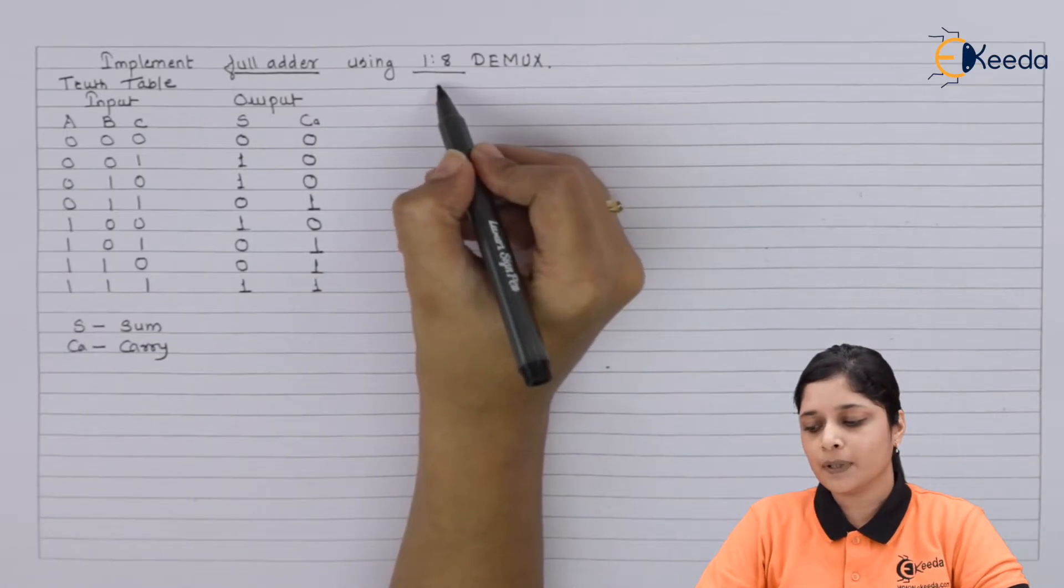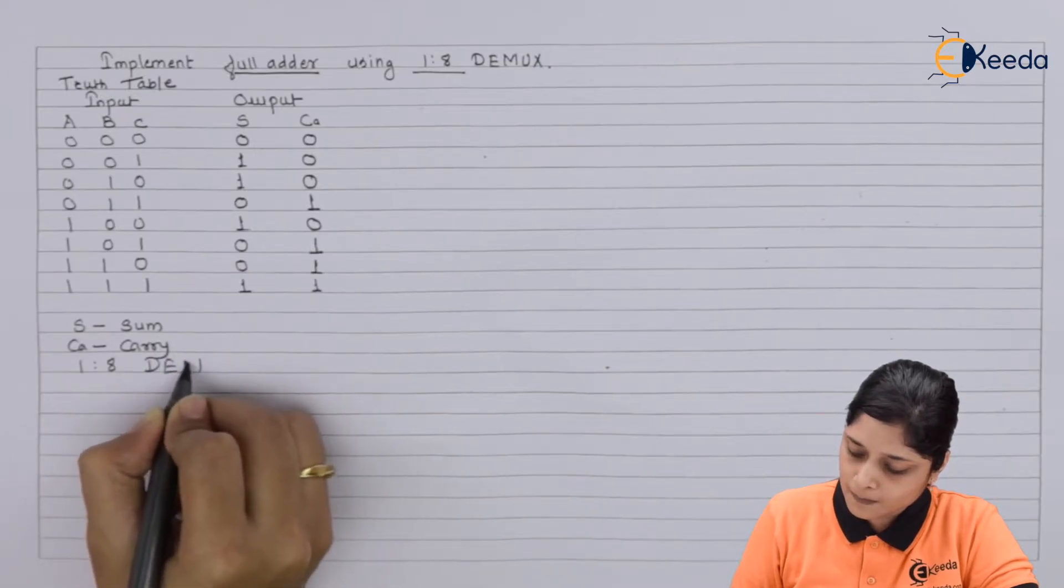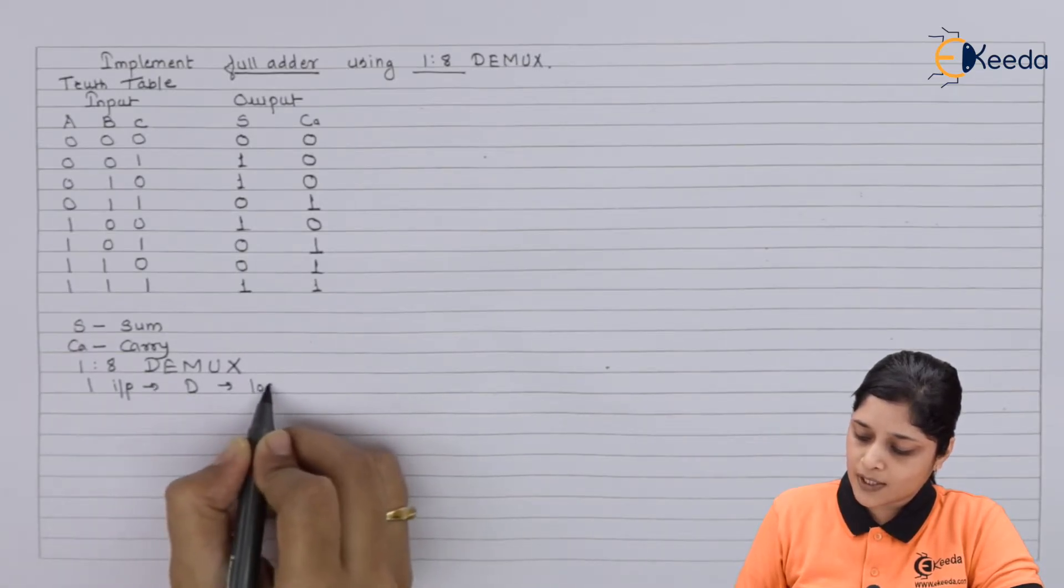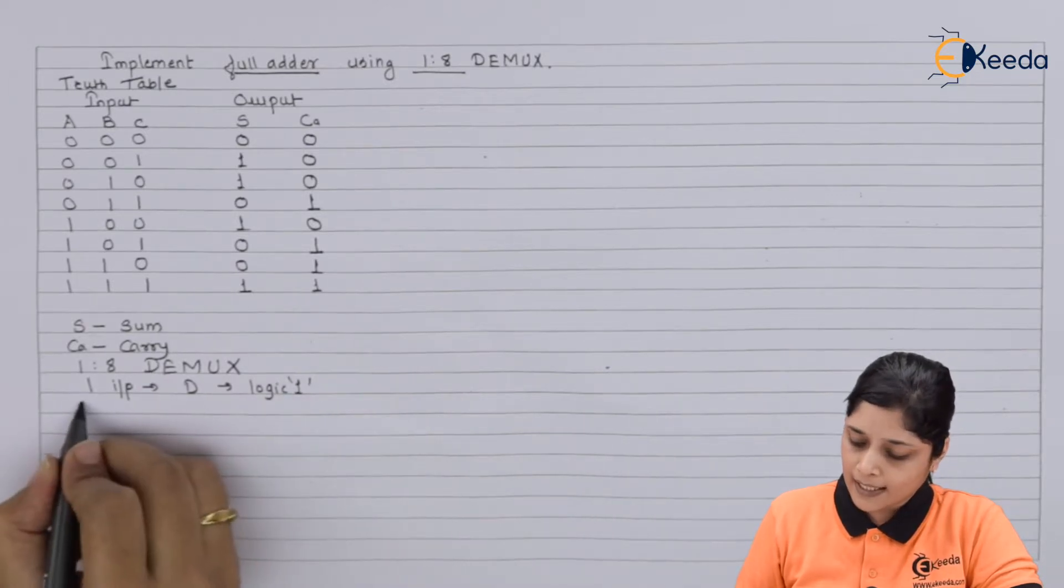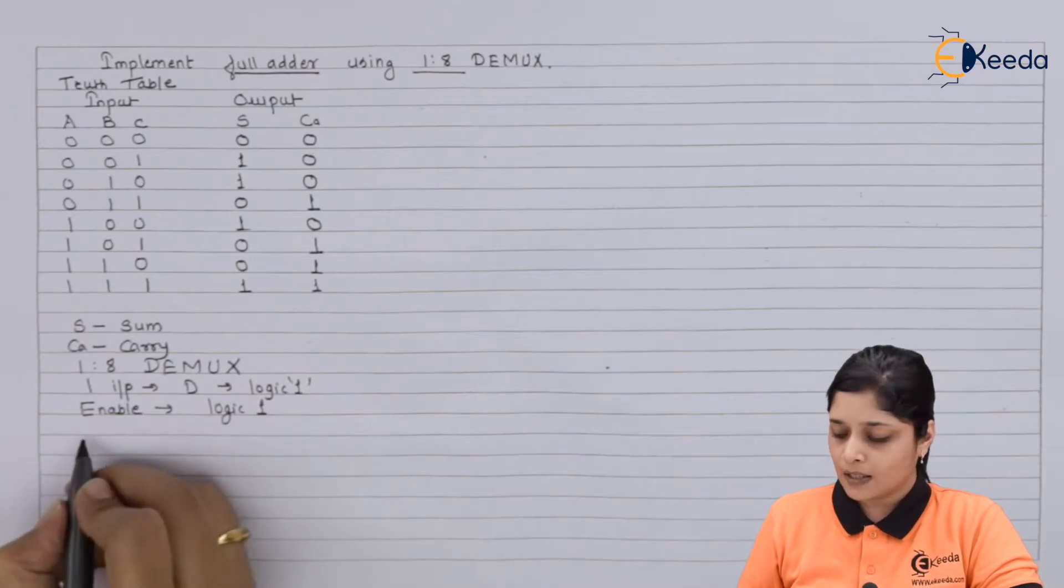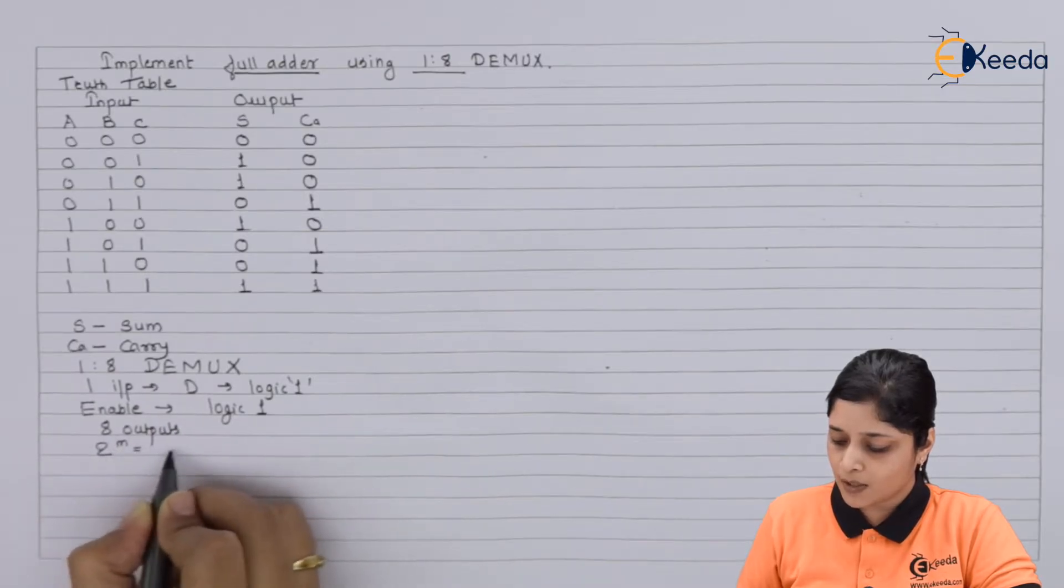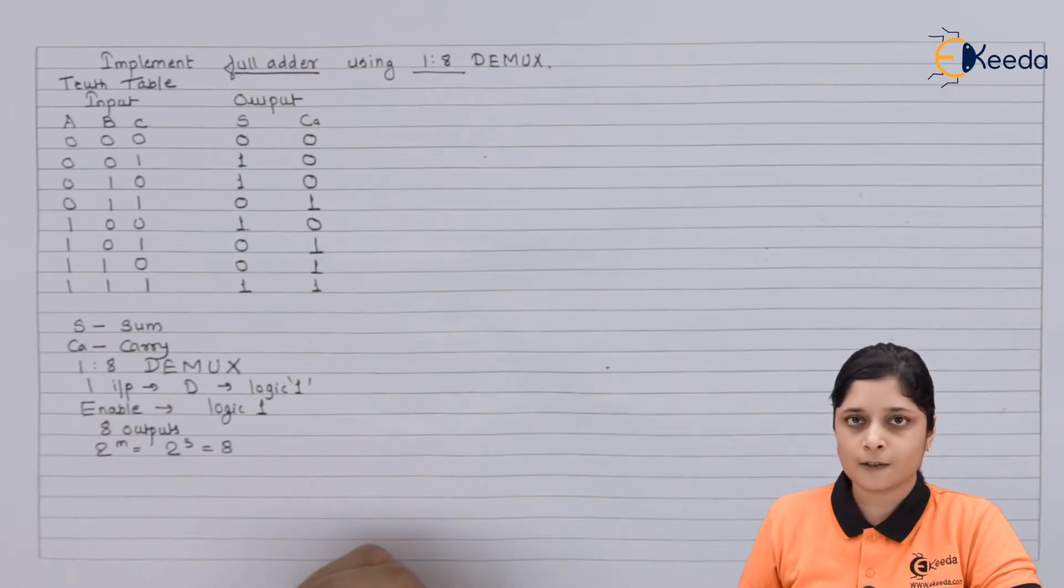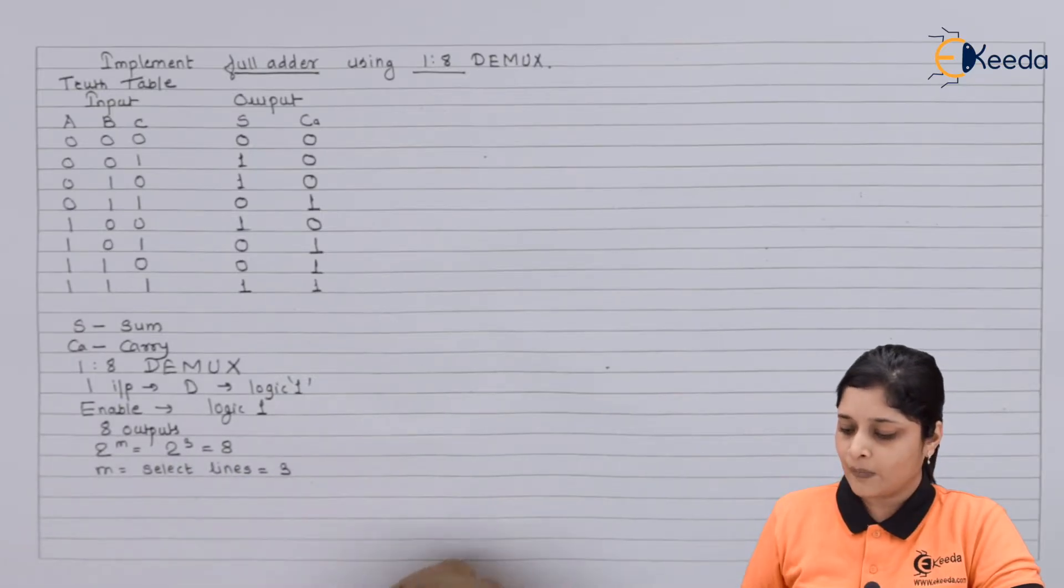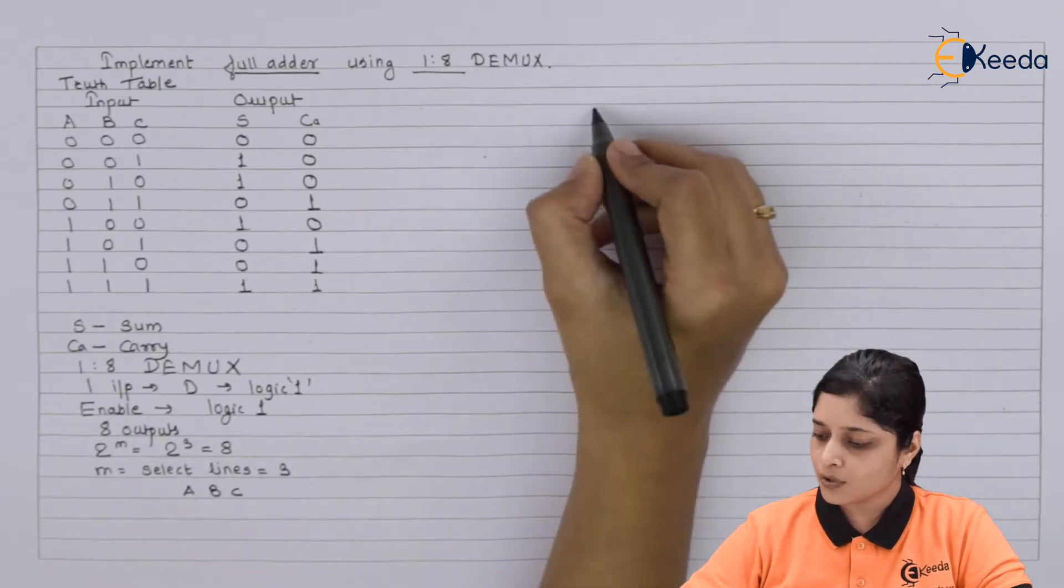Next term is what? Implementation using demultiplexer. So you have to use 1 is to 8 DEMUX. The important points are: it has one input, suppose D is always connected to the logic 1. Then enable terminal is also you have to connect it to the logic 1. Now here 8 outputs means what? 2 raised to the power M equals to 2 raised to the power 3 is equals to 8. Means M equals to select lines equals to what? 3. And these select lines will be A, B and C. Now we are going to draw the circuit for the DEMUX.